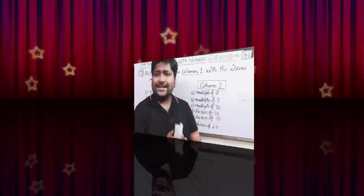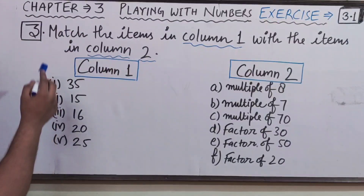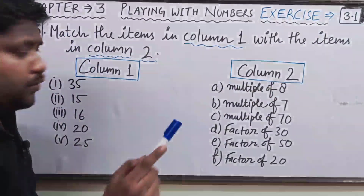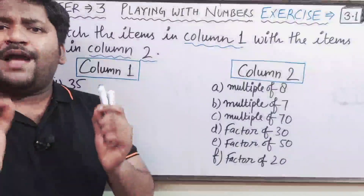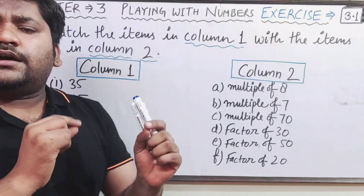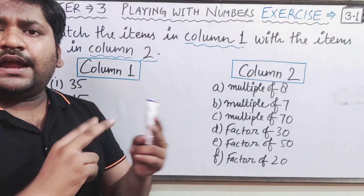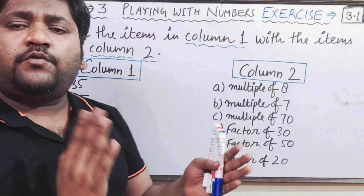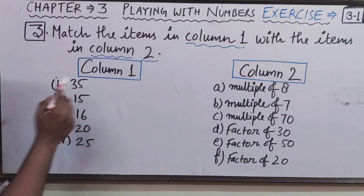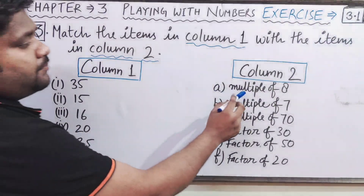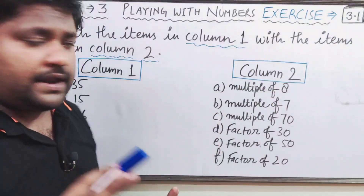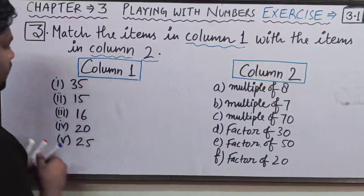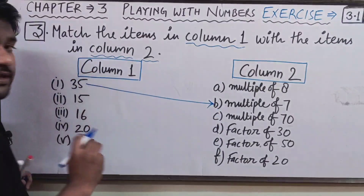Question 3 is: match the items in Column 1 with the items in Column 2. You have to match each related item. Let us check 35 — is it a multiple of 8? No. Is it in the table of 7? Yes, 7 × 5 = 35, so 35 is a multiple of 7 — match it. Now 15 — is it a factor of 30? Yes, 15 × 2 = 30, so 15 is a factor of 30 — match it.